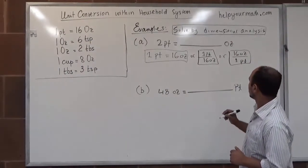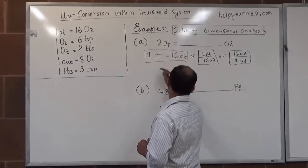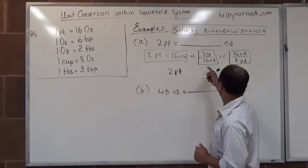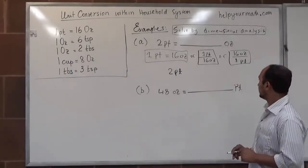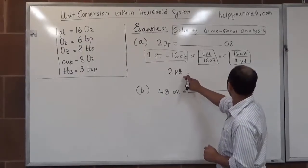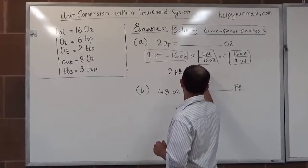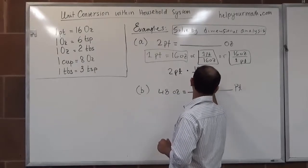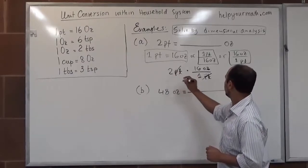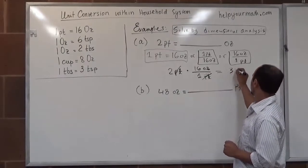Since they gave us 2 pints and we want to convert that to ounces, we will start with 2 pints and figure out which conversion factor to apply. Since we are going from pints to ounces, we want to cancel pints — so we write 1 pint on the bottom. We can cancel pint with pint, and then we are going to have the answer as 2 times 16, which is 32 ounces.